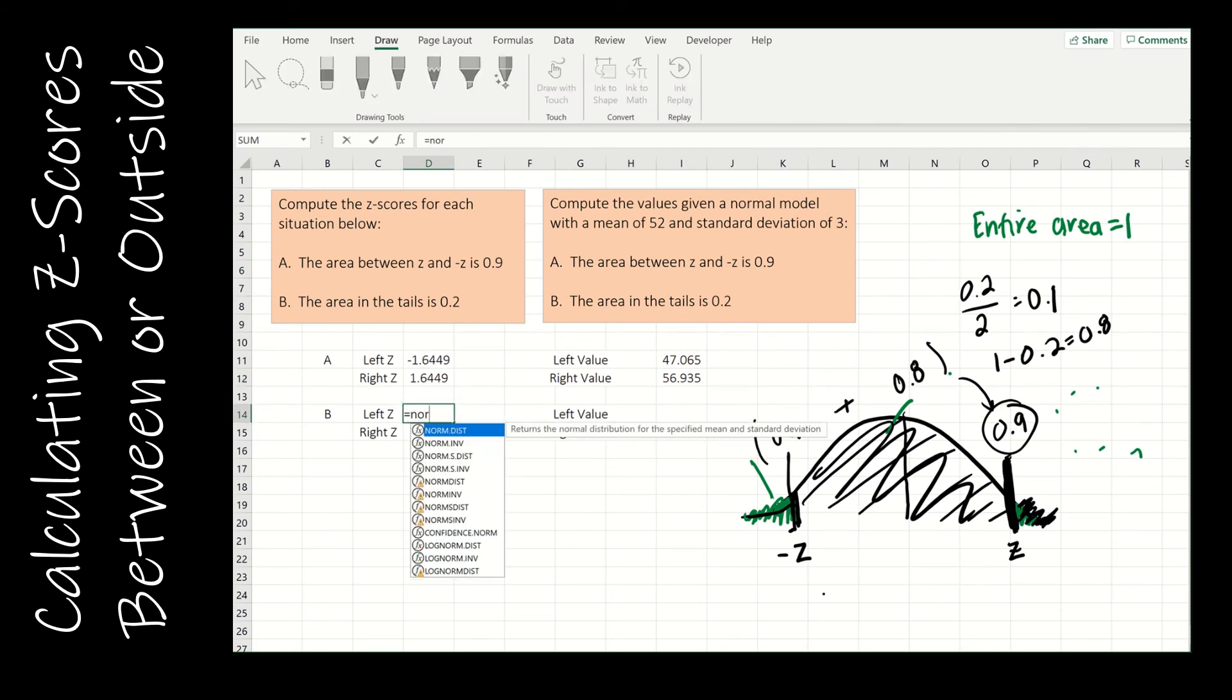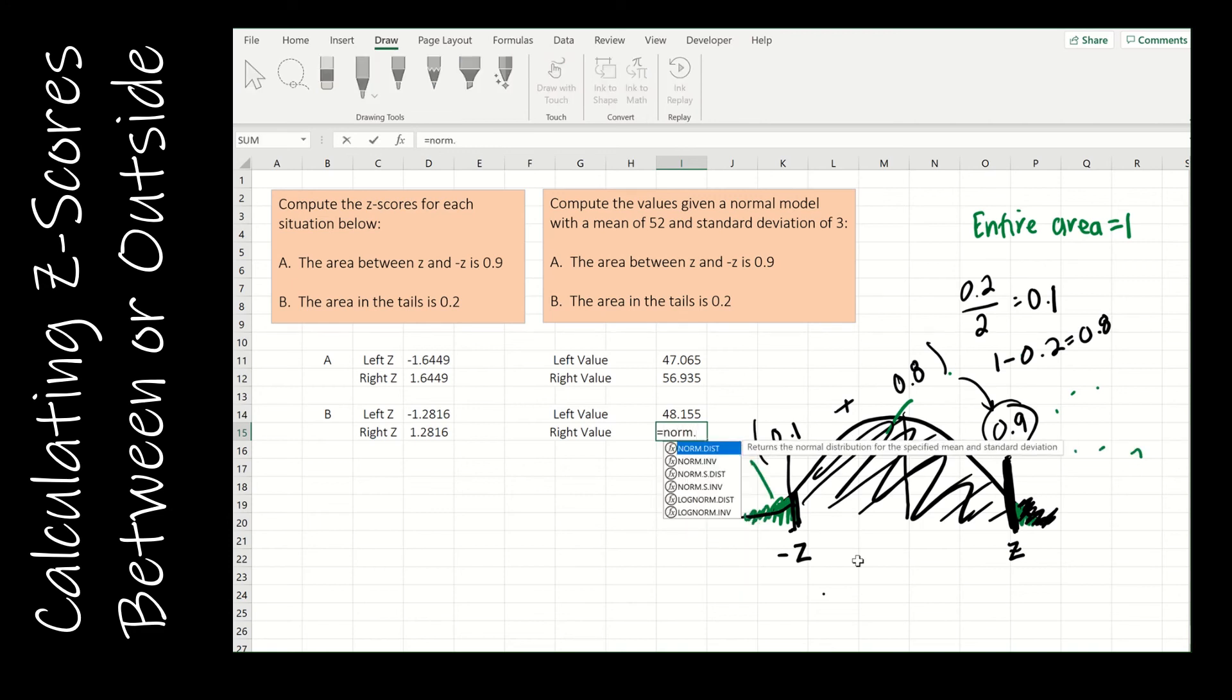Just as I did before, the left z is going to be NORM.S.INV, the probability is the smaller one, 0.1. And then this is just going to be the positive, NORM.S.INV 0.9. Notice they're the same value. And then, if I'm actually finding the values, I just use NORM.INV probability of 0.1, mean of 52, standard deviation of 3. And the right value, equals NORM.INV, probability is 0.9, mean is 52, standard deviation is 3. So the area in the tails is 0.2, which means there's 80% in the middle. So 80% of our values fall between 48.155 and 55.845.